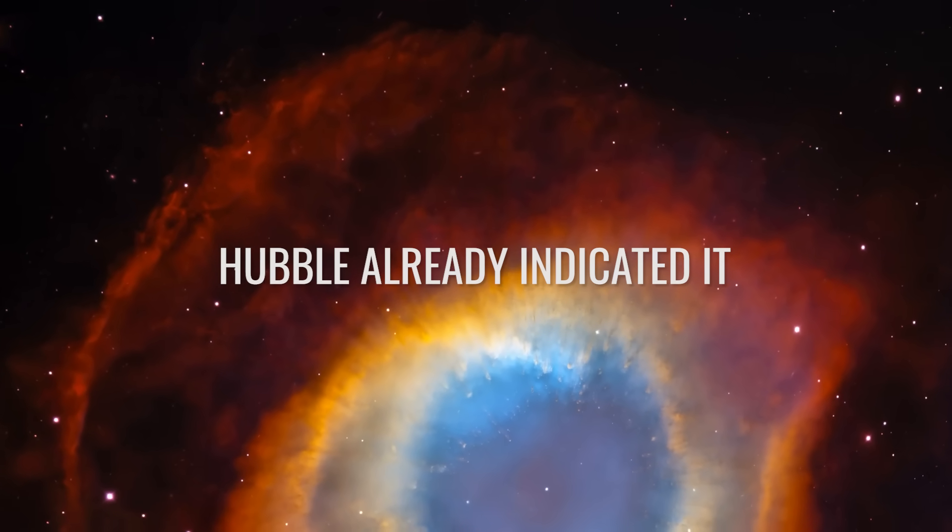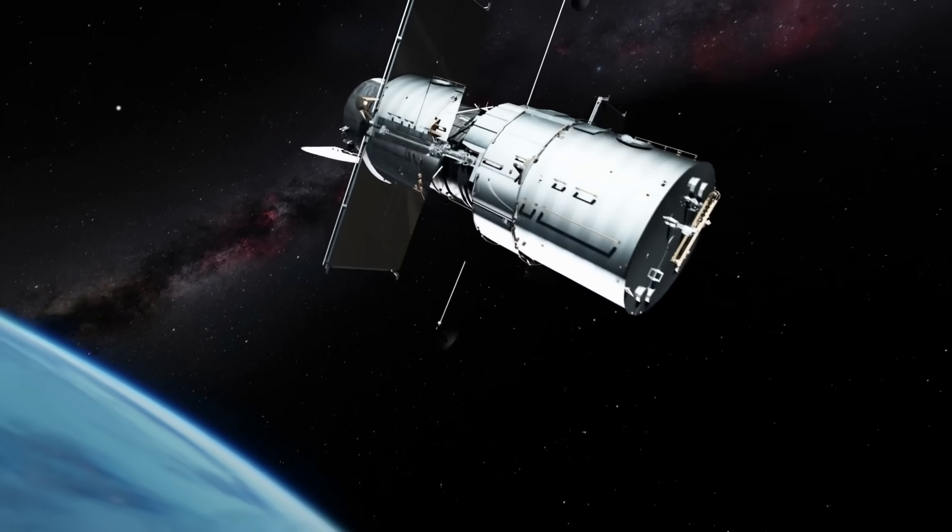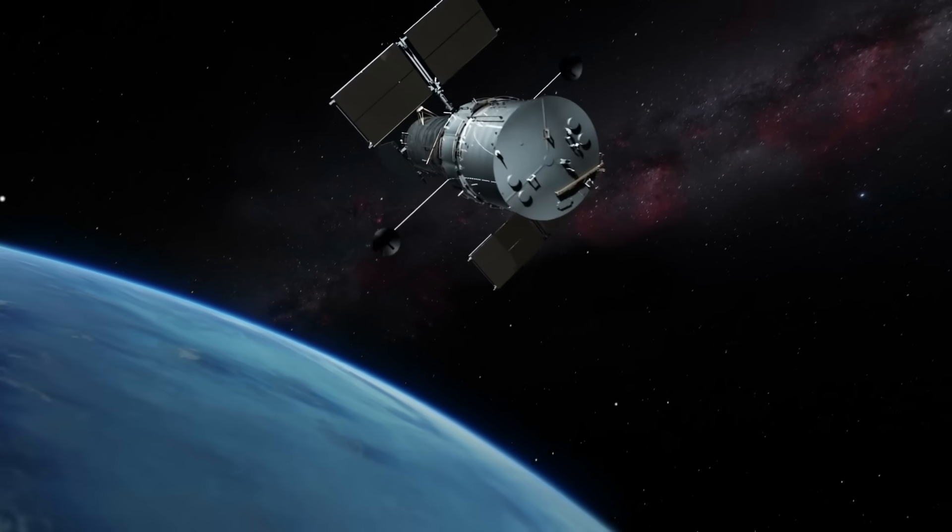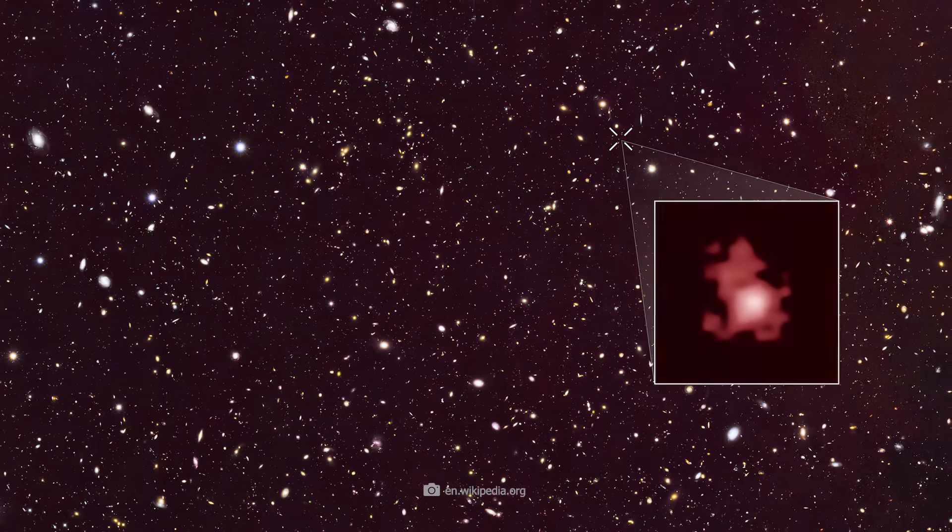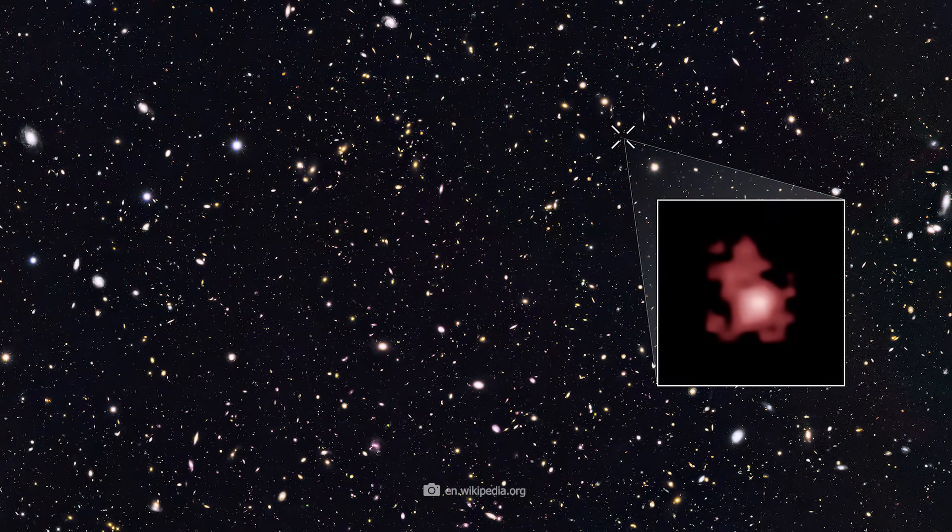Hubble already indicated it. Did you know that Hubble already found a very old galaxy and a very old star, which should really not have existed? The old space telescope discovered a galaxy with Z11, which corresponds to an age of about 13.5 billion years.